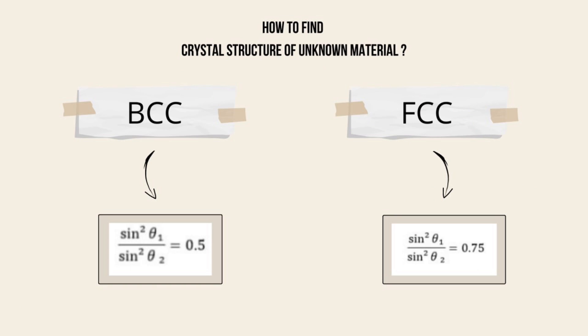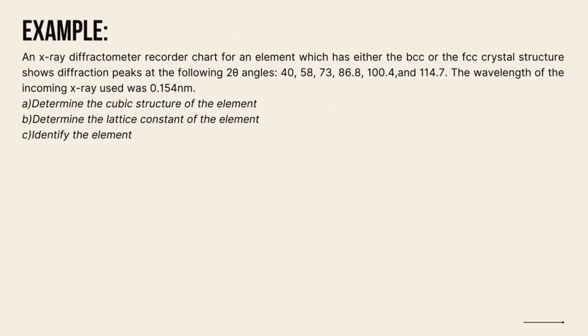How to find crystal structure of unknown material? Use formula sin squared theta 1 divided by sin squared theta 2. If we get 0.5, it will give you BCC, while 0.75 will give you FCC structure. To understand further detail, let's do this question.